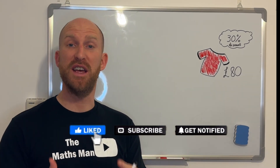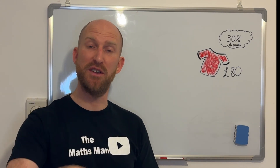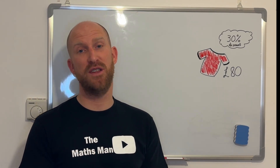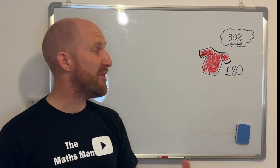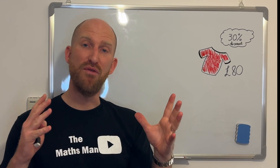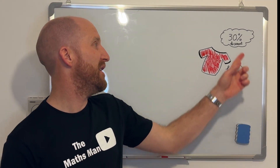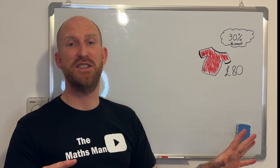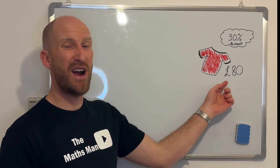If you're enjoying this video and it is helping you with your maths, please don't forget to like and subscribe to the Mathsman YouTube channel — we're trying to get to 5,000 subscribers. Now, here we have a Manchester United t-shirt. There is a 30% discount off all Manchester United jerseys and the original price is £80.